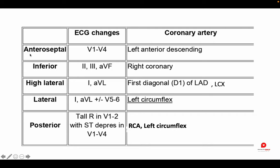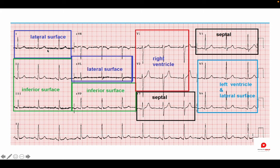Don't worry about this table right now. When we cover all the leads and all the waves, it will be easy for you, and I will show this table repeatedly. In summary: 1 and AVL is high lateral, 1 AVL V5 V6 is lateral, 2 3 AVF is inferior, and V1–V4 is anteroseptal. More specifically, V1 and V2 represent the right ventricle, V3–V4 the septal area, and V5–V6 the lateral position. We will discuss this systematic approach repeatedly in coming sessions.